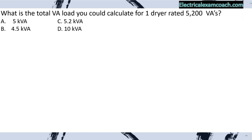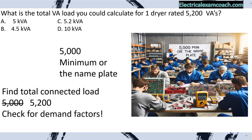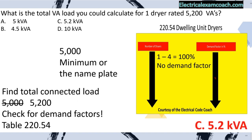Practice problem: What is the total VA load for one dryer rated at 5,200 VAs? Find the total connected load: 5,000 minimum or the nameplate, whichever is larger — in this case the nameplate is larger, so we select 5,200. Check for demand factors: per Table 220.54, one to four dryers is calculated at 100% — no demand factor. We select C.